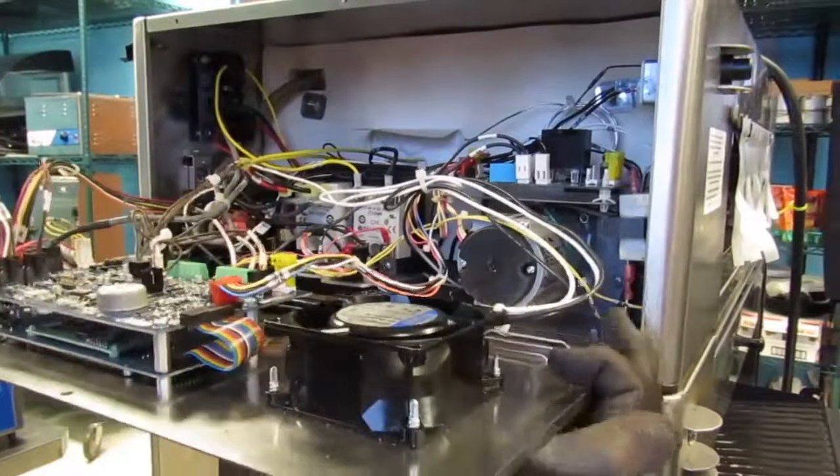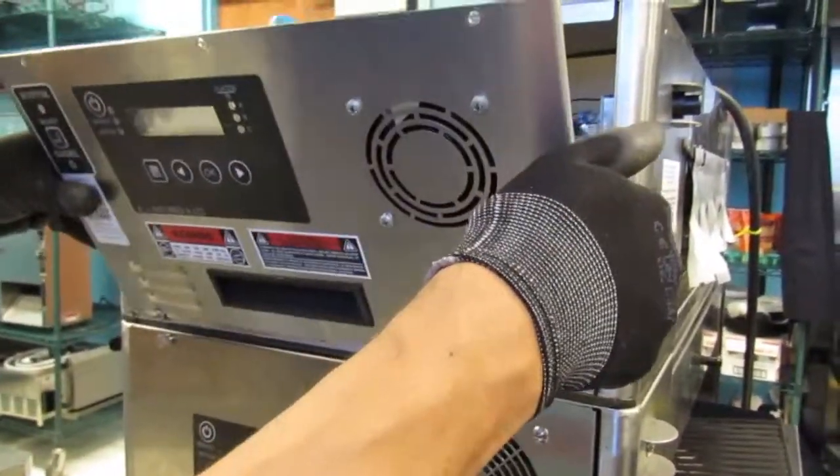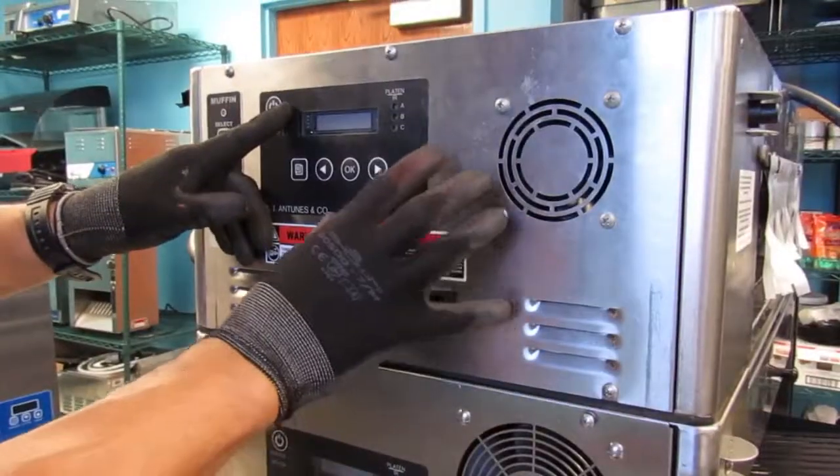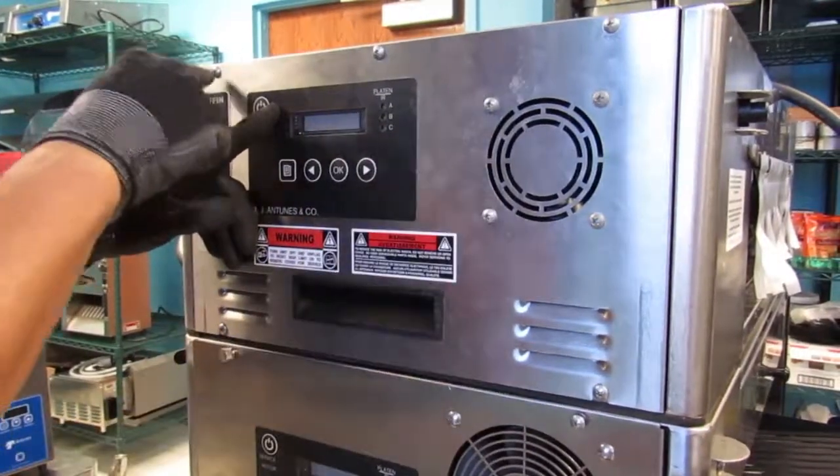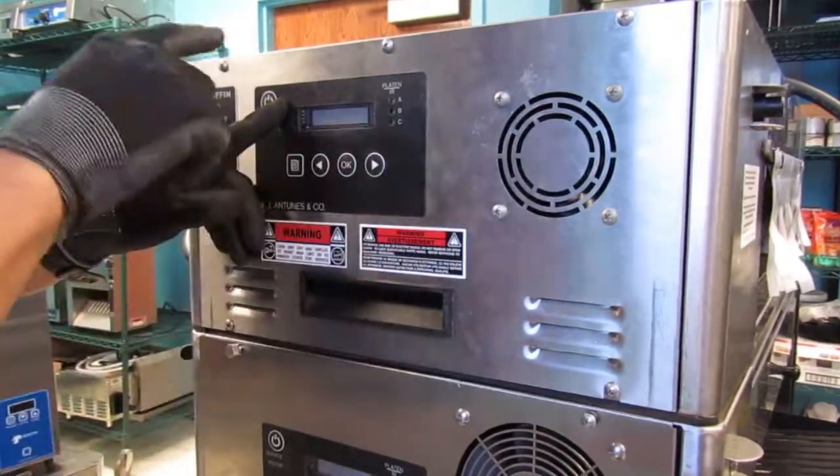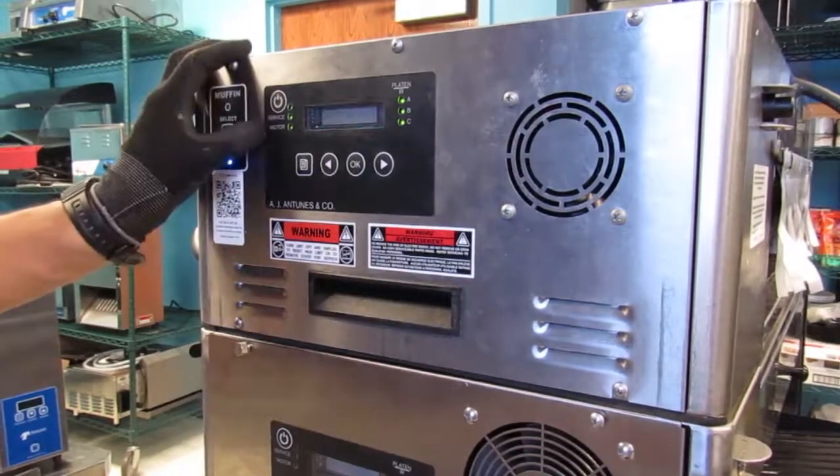Carefully close the panel and secure with the screws. With the service panel closed and secured with the screws, plug the power cord into the power source. Turn the power on and test the toaster for proper operation.